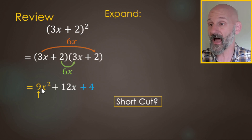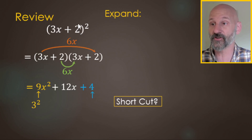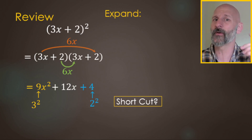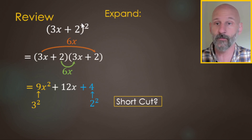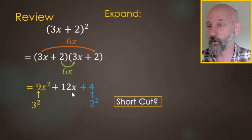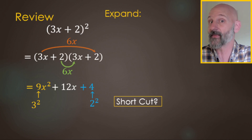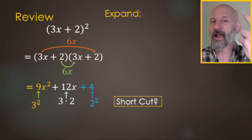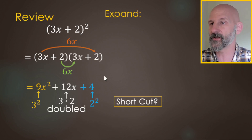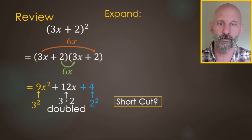The 9 comes from 3 times 3, or 3 squared. The 4 is 2 squared. Now this 12 — that's the one that sometimes gets missed. Because of the exponent 2, you're already thinking you'll square things. The 12 comes from the outers and the inners; they're the same: 2 times 3 and 3 times 2. So it's 3 times 2, doubled. 3 times 2 is 6, doubled makes 12.